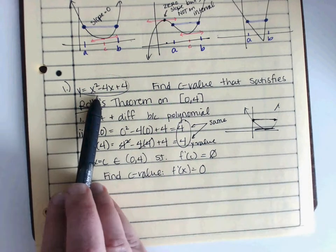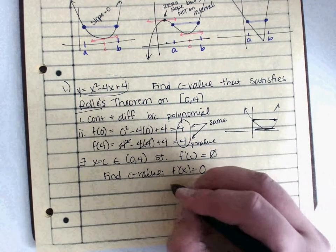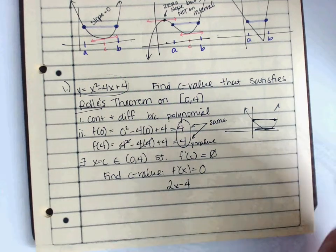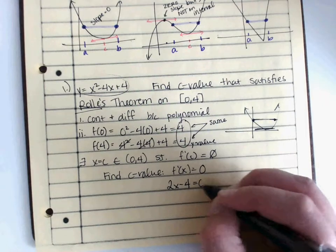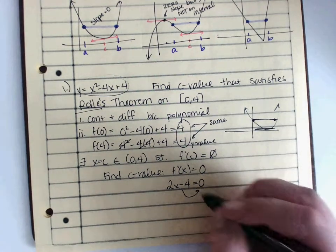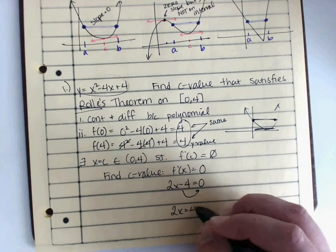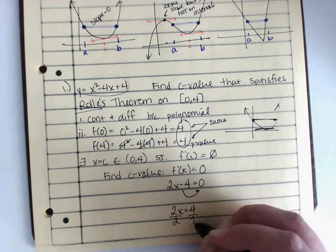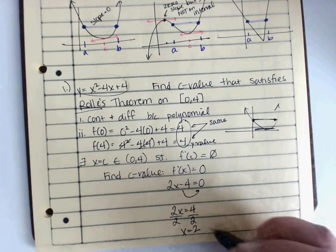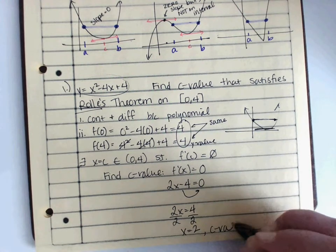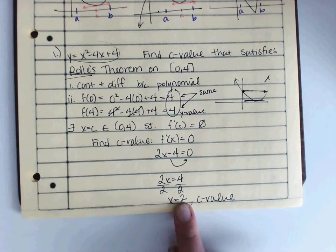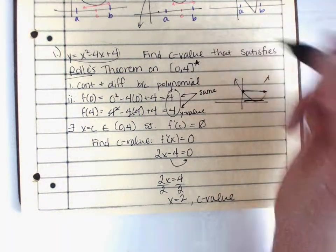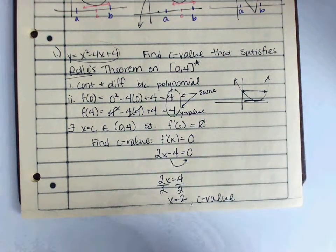f prime of x, look at your equation right here. It's 2x minus 4. Then the plus 4, remember that derivative cancels out to 0. Set that equal to 0. Then I'm going to add my 4 across. 2x is 4. Then divide by 2, x is 2. That would be my c value. Now, also remember that we talked about this value has to be on your interval. Well, if my interval is from 0 to 4, then 2 fits between that. So I am done.